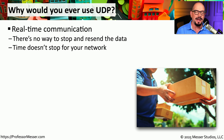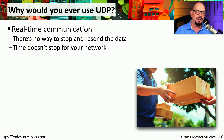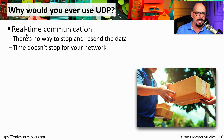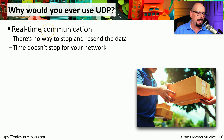You might be wondering why any application would want to use UDP. One advantage is that there's very little overhead — you simply send data and make a best effort to get it to the other side. A good example is real-time communication. Applications that use Voice over IP or send video across the network are all real time. If information is lost along the way, we can't rewind the conversation — once that data is lost, there's no going back. For that reason, VoIP prefers UDP since it has the least overhead.